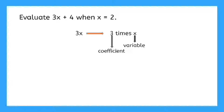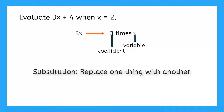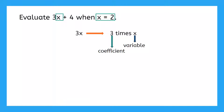This problem tells me that my variable x is equal to 2, so I'm going to use a strategy called substitution. Substitution just means we're going to replace one thing with another. For expressions with one variable, we replace the variable with the given value. I write my expression 3x plus 4, and wherever I see my variable x I substitute a 2. Notice I put parentheses around my substitution — parentheses mean multiplication. This helps me know I mean 3 times 2, and not the number 32.